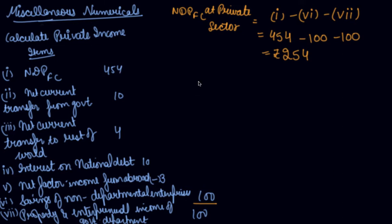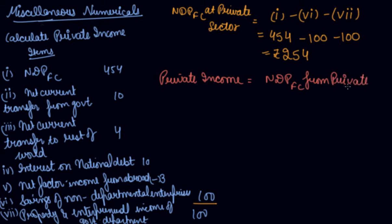Now you have to calculate your private income. The formula to calculate private income is: your net domestic product at factor cost from the private sector, plus your net factor income from abroad — what you get is added and what you pay is subtracted — plus interest on national debt.